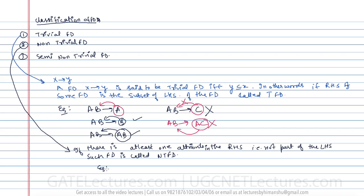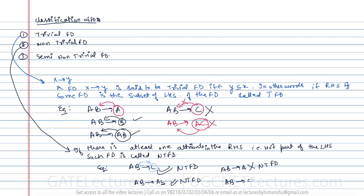For example, AB determines C — the right-hand side is not a subset of the left-hand side, so it is a non-trivial functional dependency. If AB determines AC, C is not part of the left-hand side, so it is non-trivial. AB determines A is not non-trivial because it is trivial. AB determines CD is also a non-trivial functional dependency.